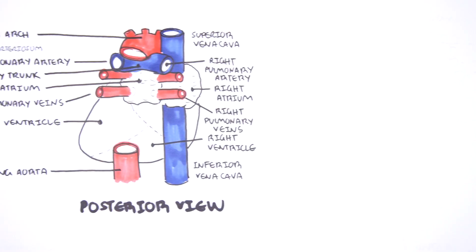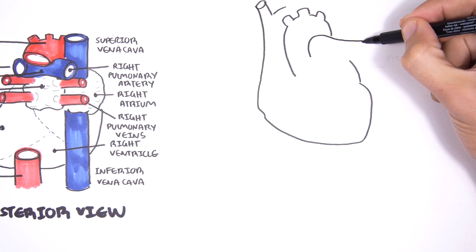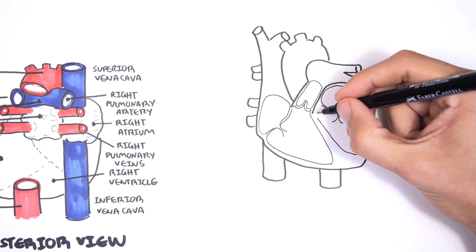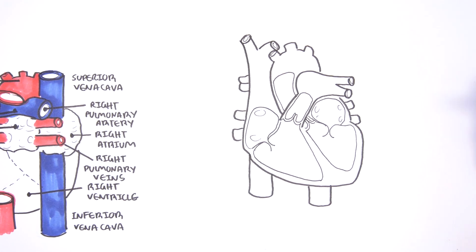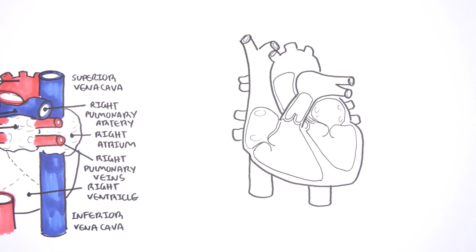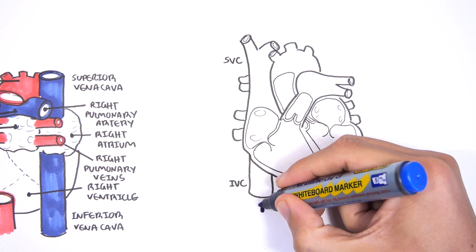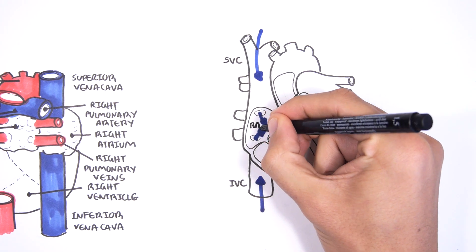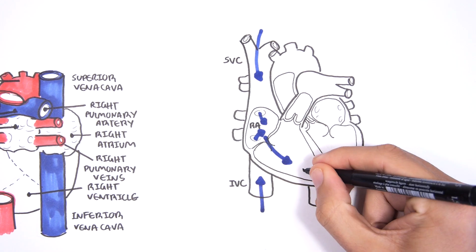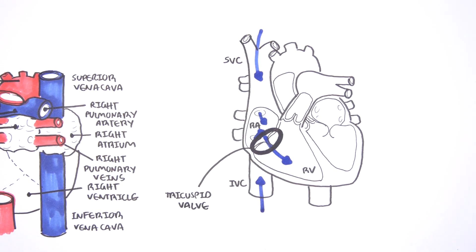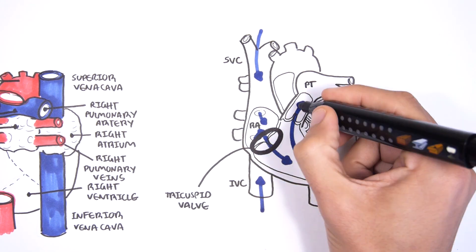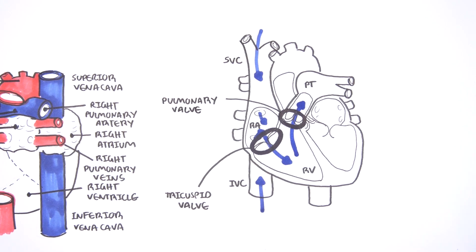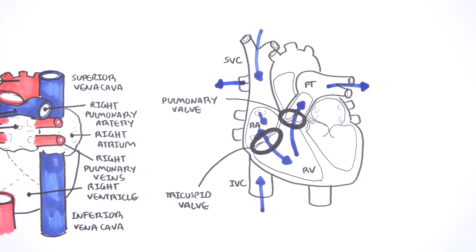Now I want to cut a cross-section of the anterior view of the heart and see what's happening inside. You can see that there are four chambers within the heart — your atria and your ventricles. The superior vena cava and inferior vena cava bring blood to the right atrium. From the right atrium, blood flows to the right ventricle through a valve known as the tricuspid valve. From the right ventricle, blood flows up to the pulmonary trunk through another valve called the pulmonary valve, and then blood will go to the lungs.